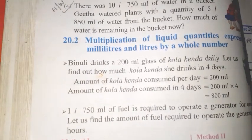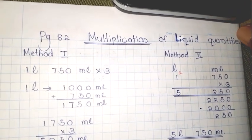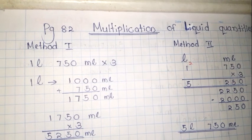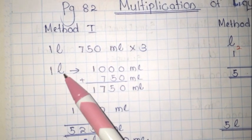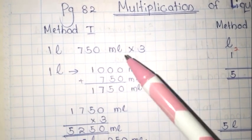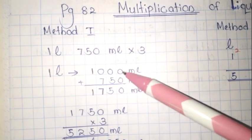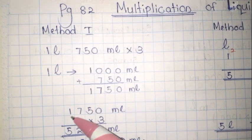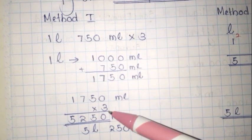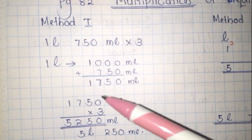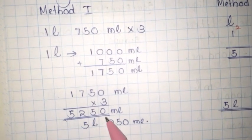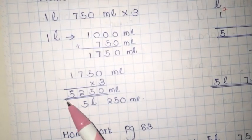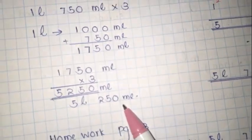Page 82. To multiply, there are 2 methods you can follow. Example: 1 litre 750 millilitres multiplied by 3. Method 1 — convert litres to millilitres: 1 litre = 1000 millilitres. Adding 750 millilitres gives 1750 millilitres. Then 1750 × 3 = 5250 millilitres. Converting back gives 5 litres and 250 millilitres.